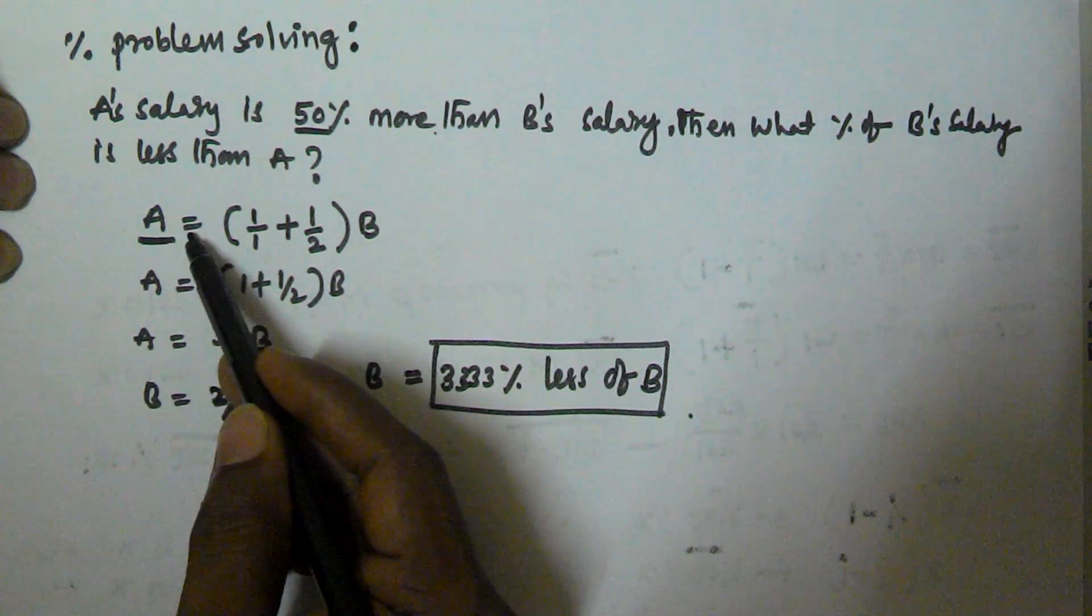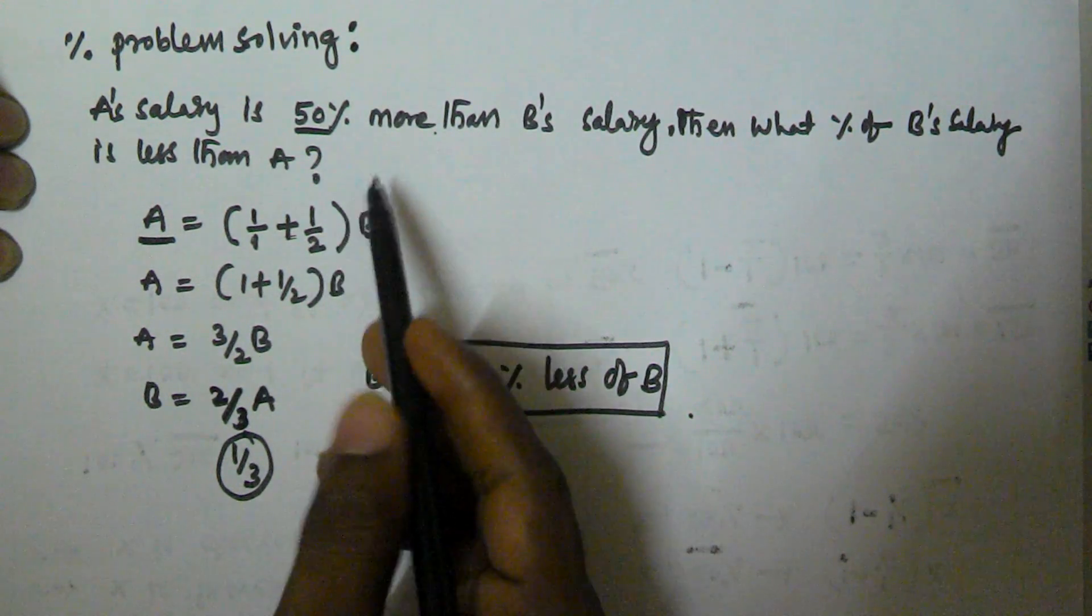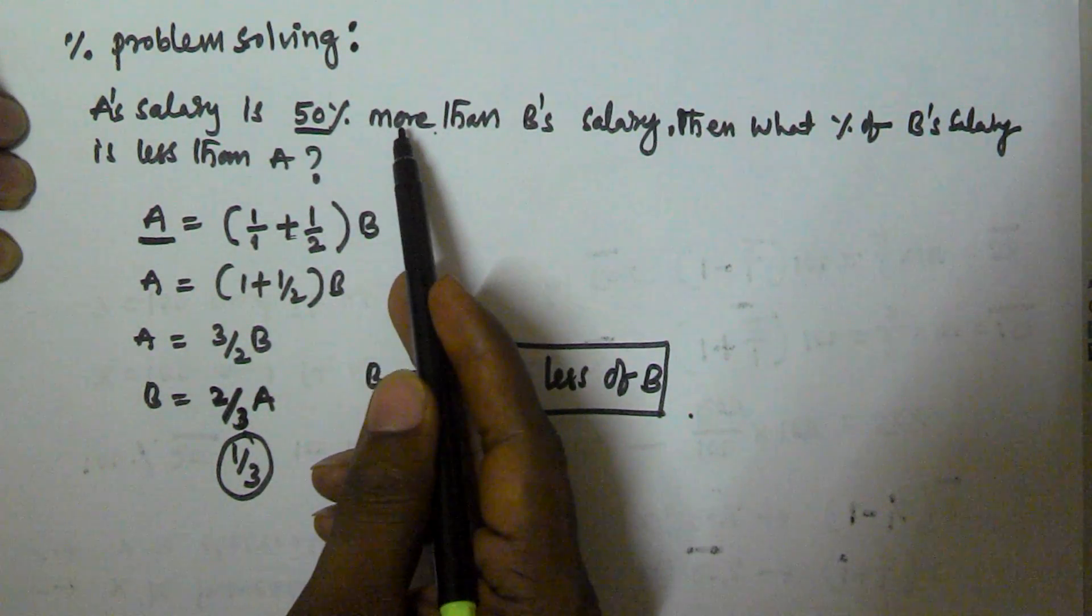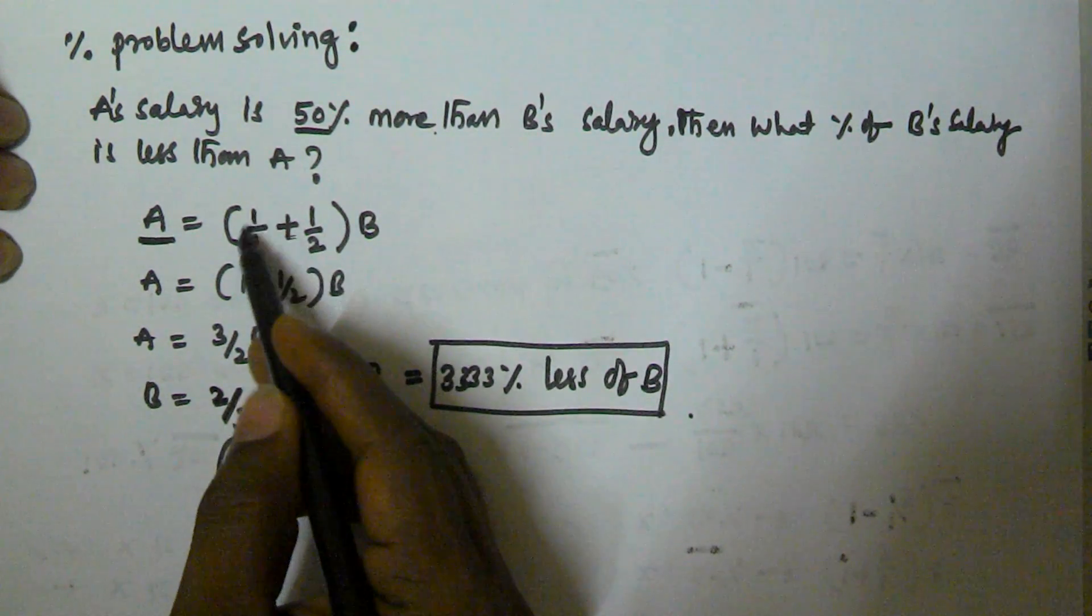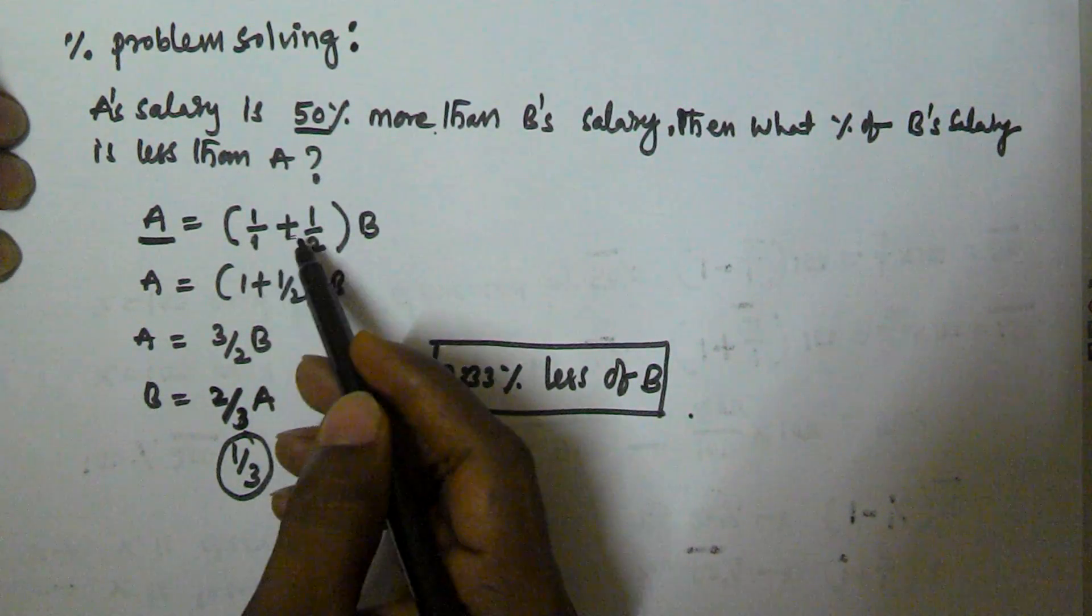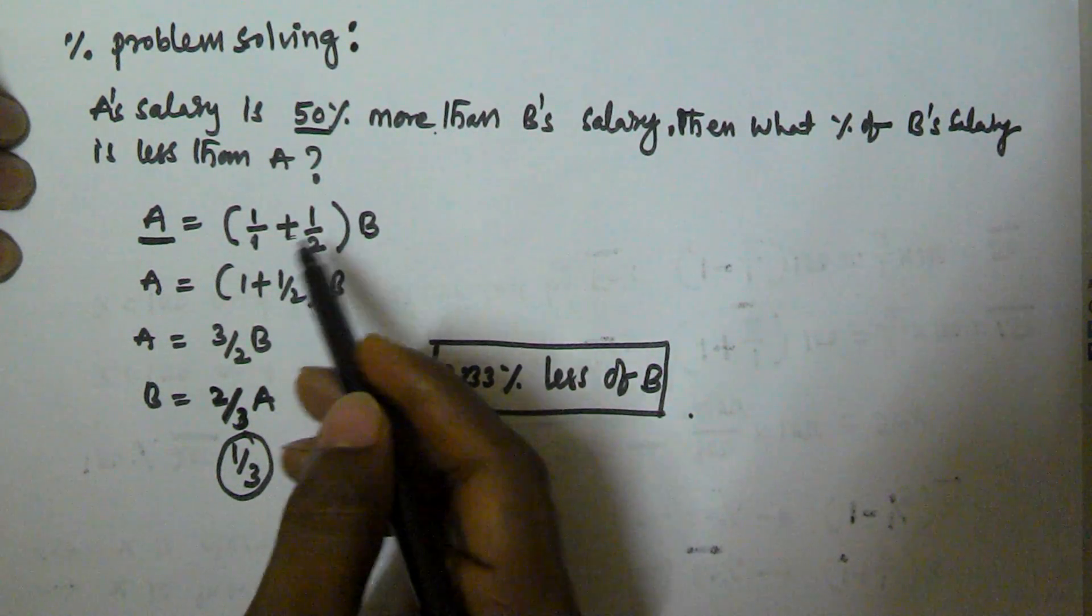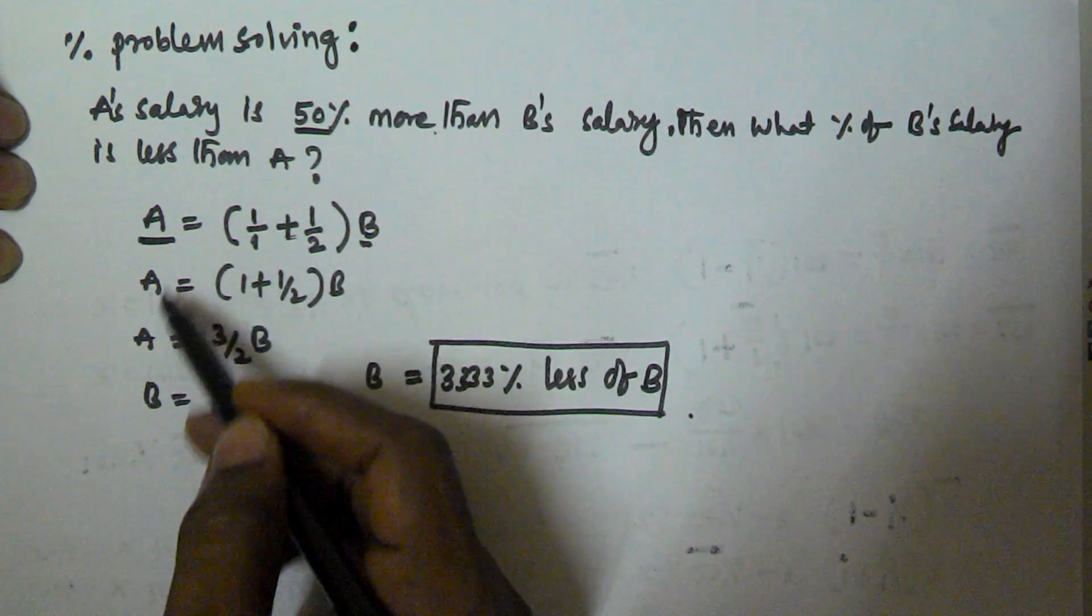So initially what we have to do is A is equal to 1 plus 1 by 2 of B. Why 1 plus 1 by 2? It is 50% more. 50% more than B's value. So 1 gives the 100% value of B - that is the current value. And plus 1 by 2 will give the 50% more value of B. So that is equivalent to A.